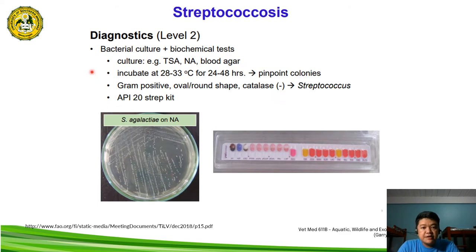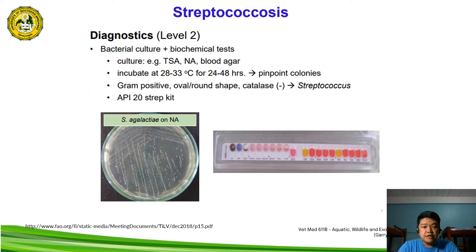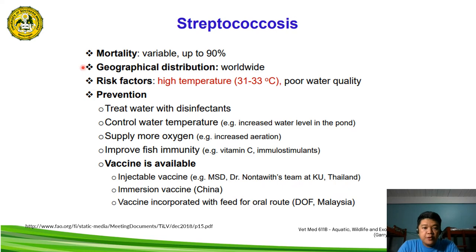Another level 2 diagnostic is bacterial culture and biochemical testing. These are the media that can be used for bacterial isolation or bacterial culture, along with a description of the streptococcus colonies in bacterial culture. The mortality is variable but can reach up to 90%.